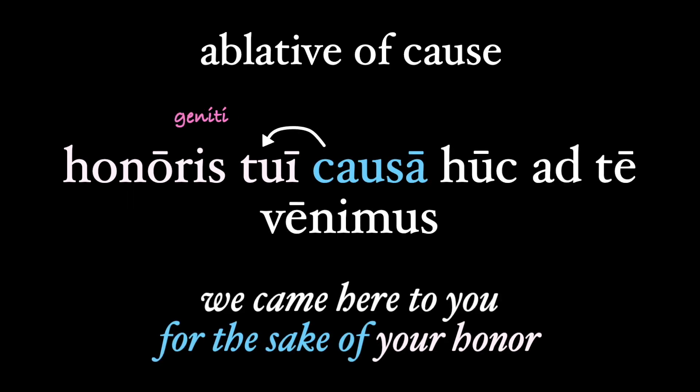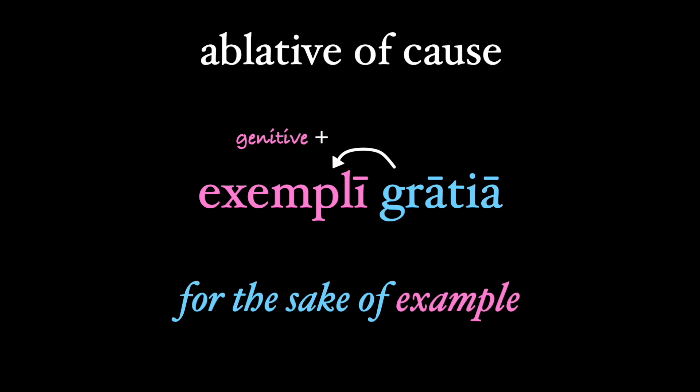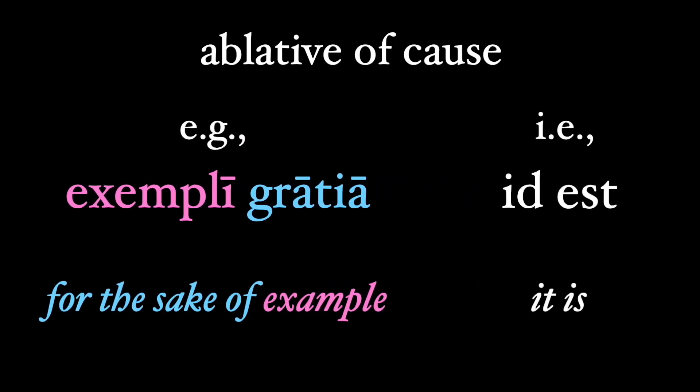So, honoris tui causa, huc ad te venimus — we came here to you for the sake of your honor. And there's the famous abbreviation e.g., which stands for exempli gratia, meaning 'for the sake of example,' which is used to provide a list of illustrative examples rather than an exhaustive list of items — and that's what i.e. is for. Sorry, people mix these two abbreviations up all the time.